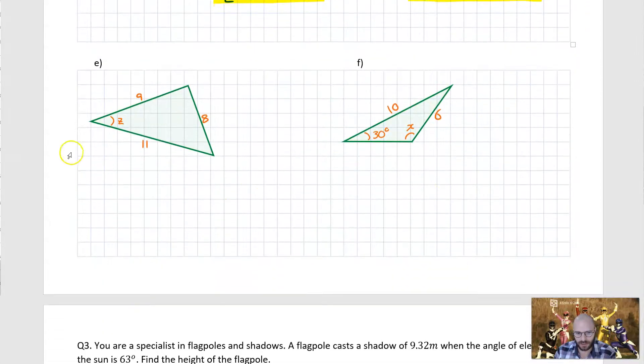Now going down to E we have an unknown angle quantity and three known side lengths. Because we don't have two complementary angles with sides, once again we're doing the cosine rule. So in this case we're finding the unknown angle.